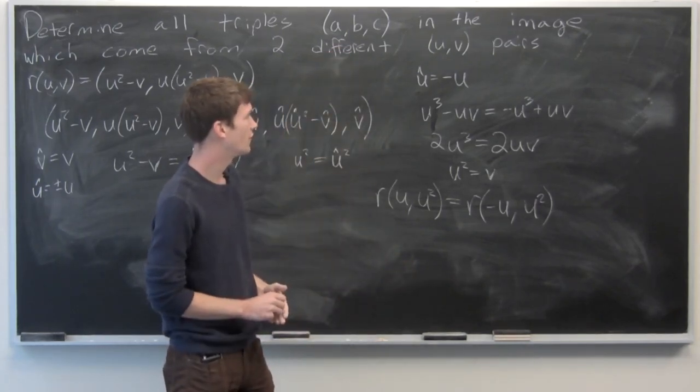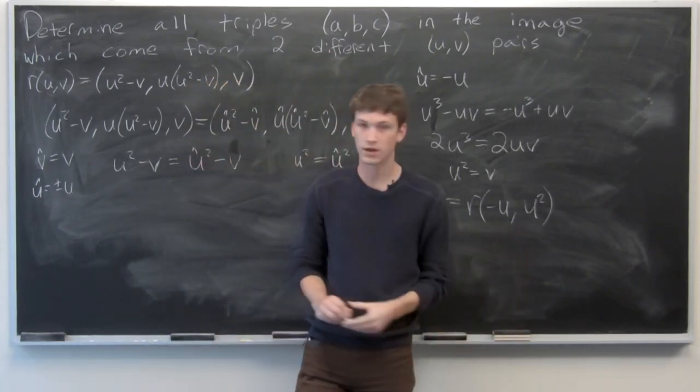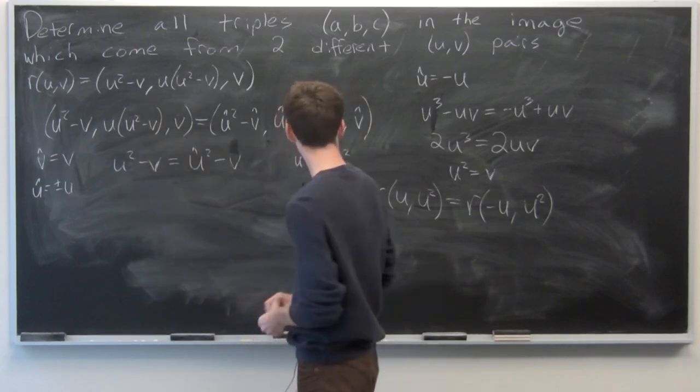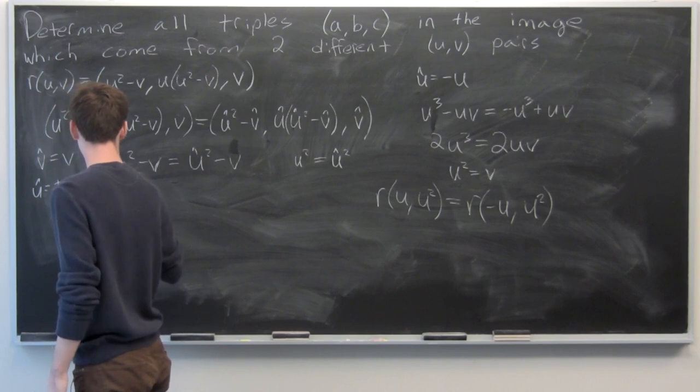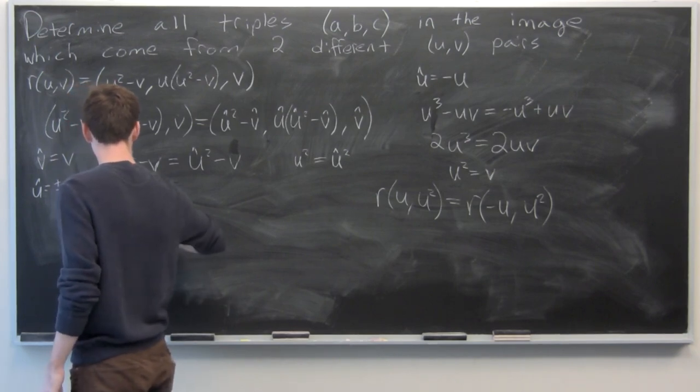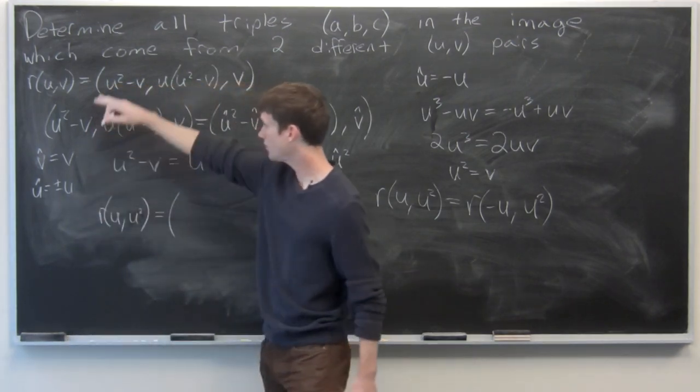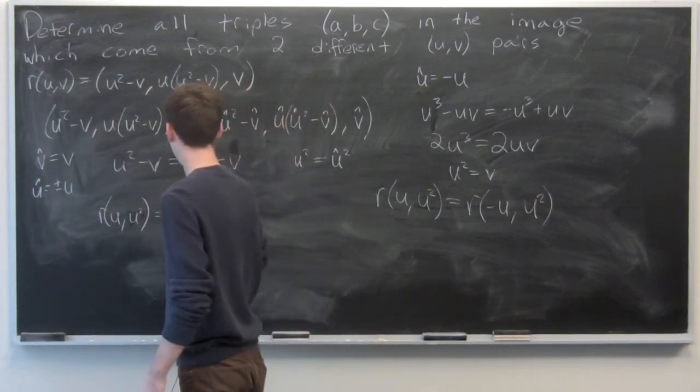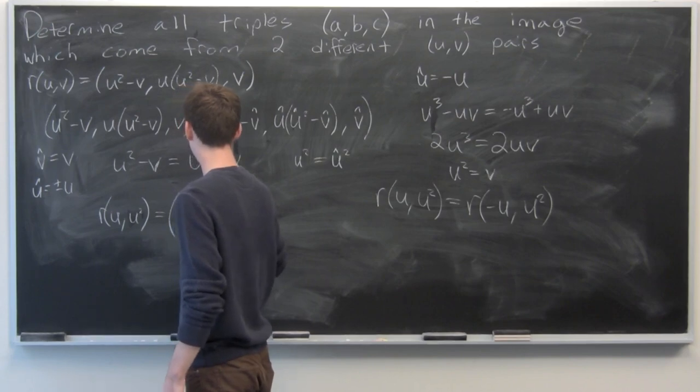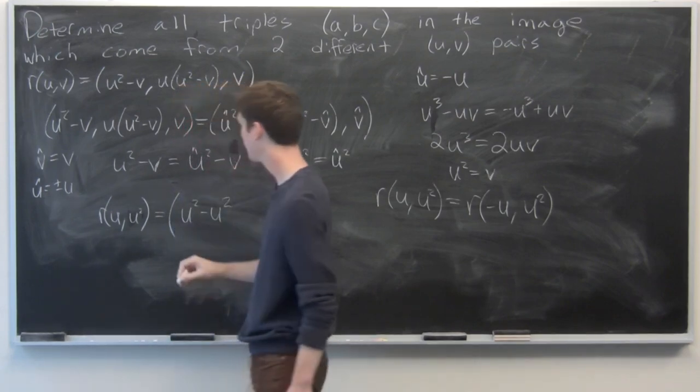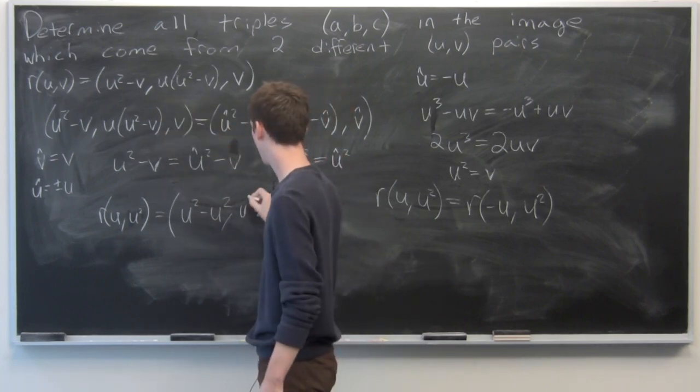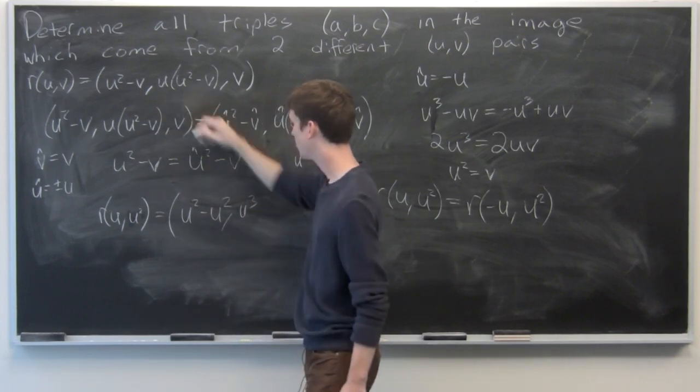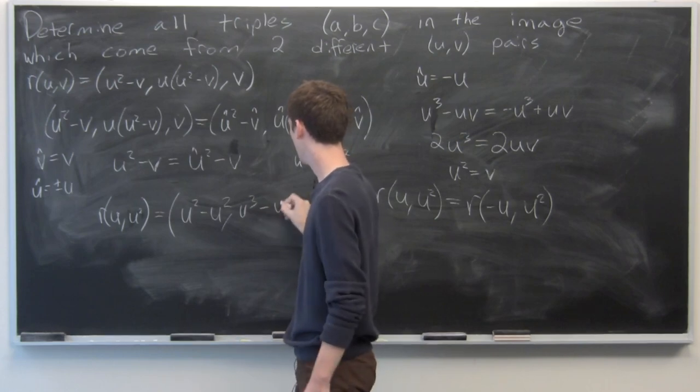Let's get them in the form of the triples, so that's just plugging in to the r equation. We'll do r of u, u-squared which is equal to u-squared minus u-squared, comma,